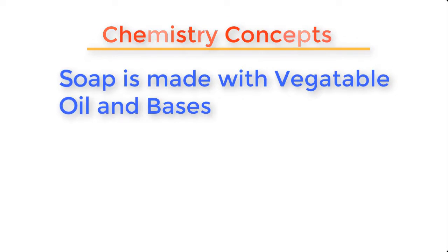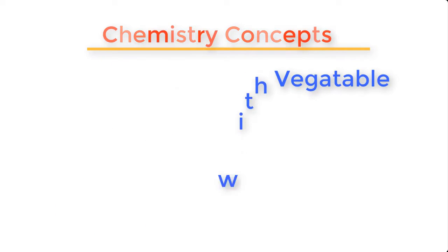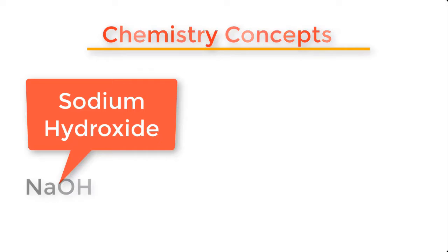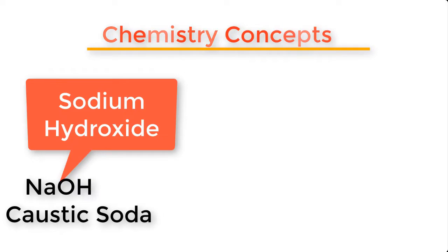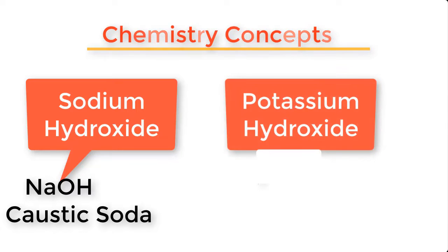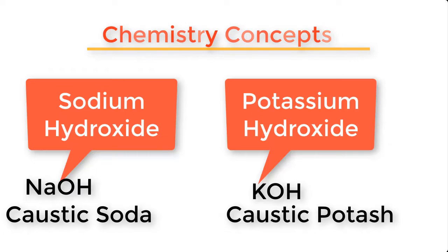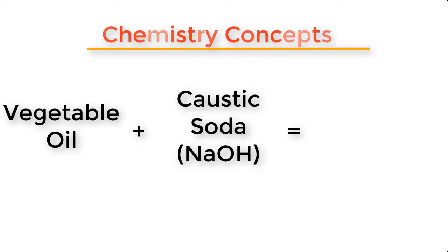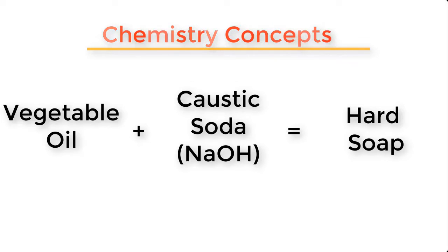Before we go into the production proper, let me explain some basic concepts about soap making using vegetable oils and bases. In chemistry, bases are substances like sodium hydroxide with the chemical formula NaOH, also called caustic soda. Another base is potassium hydroxide with chemical formula KOH, also called caustic potash. When you react vegetable oil with caustic soda — sodium hydroxide — you will get a hard soap.